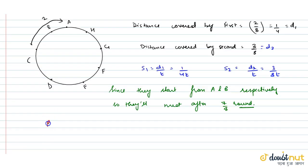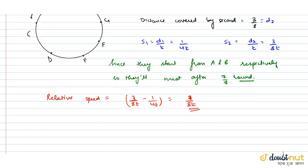Agar ham relative speed dekhta hai. Toh relative speed. Agar paas 3 upon 8T minus 1 upon 4T lete hai. That is 1 upon 8T ke equal. Toh agar distance dekhta hai. Toh distance hota hai. Agar relative speed into...